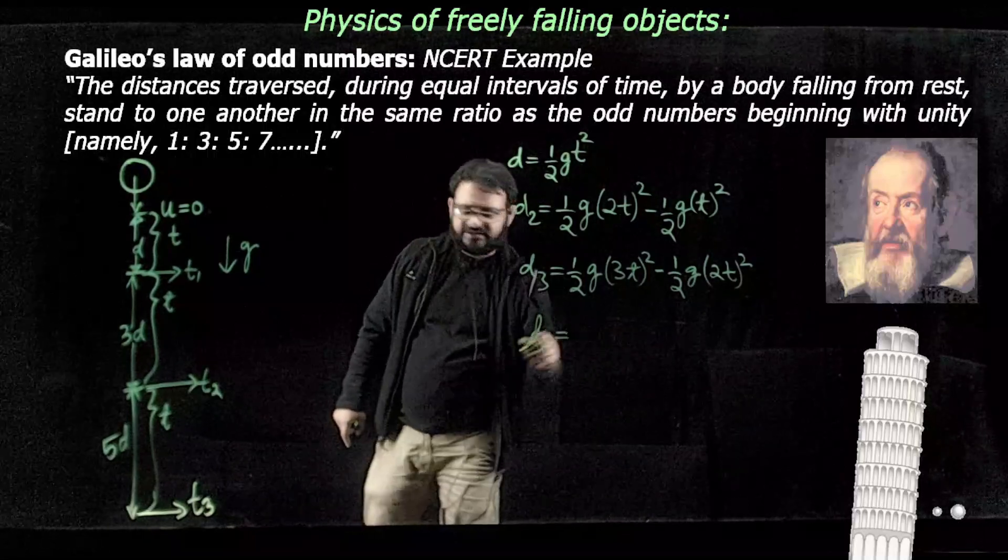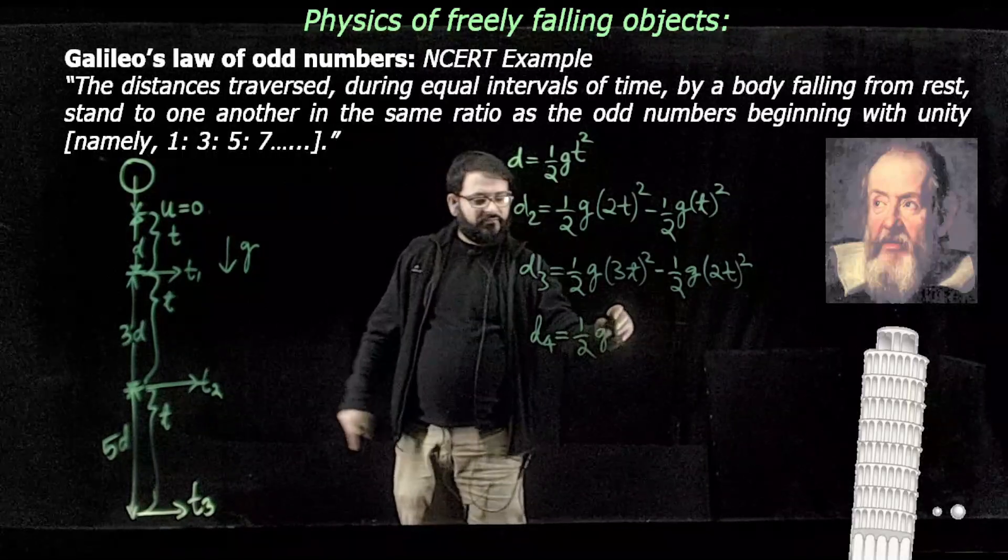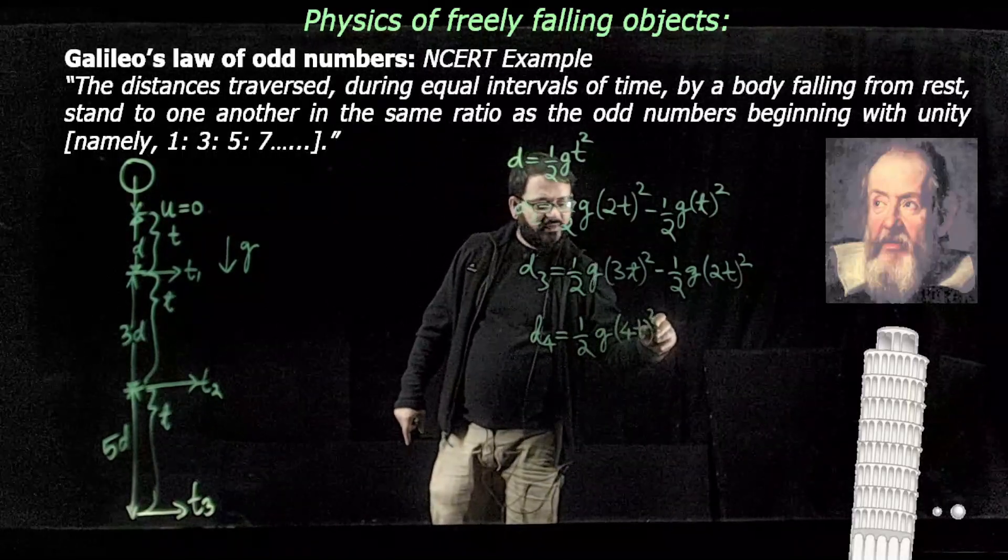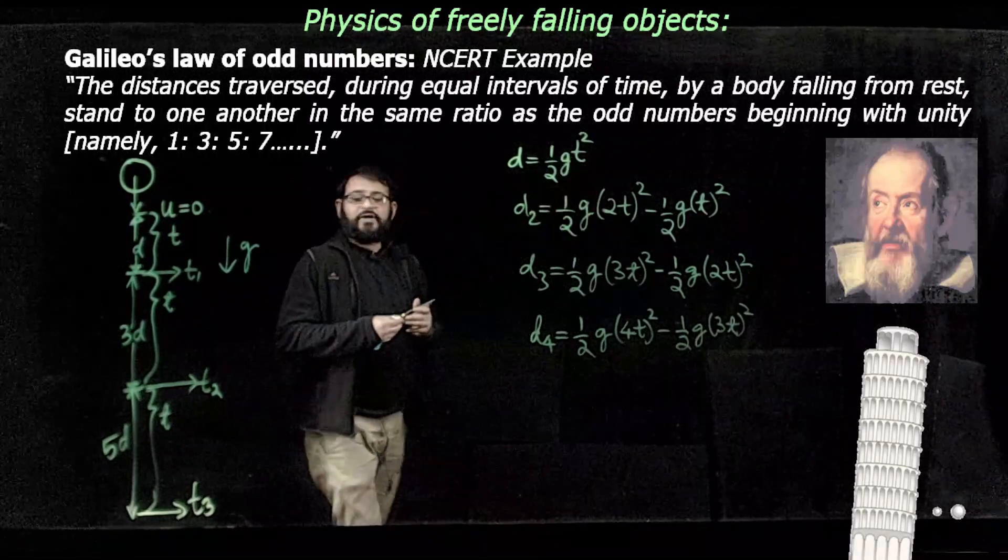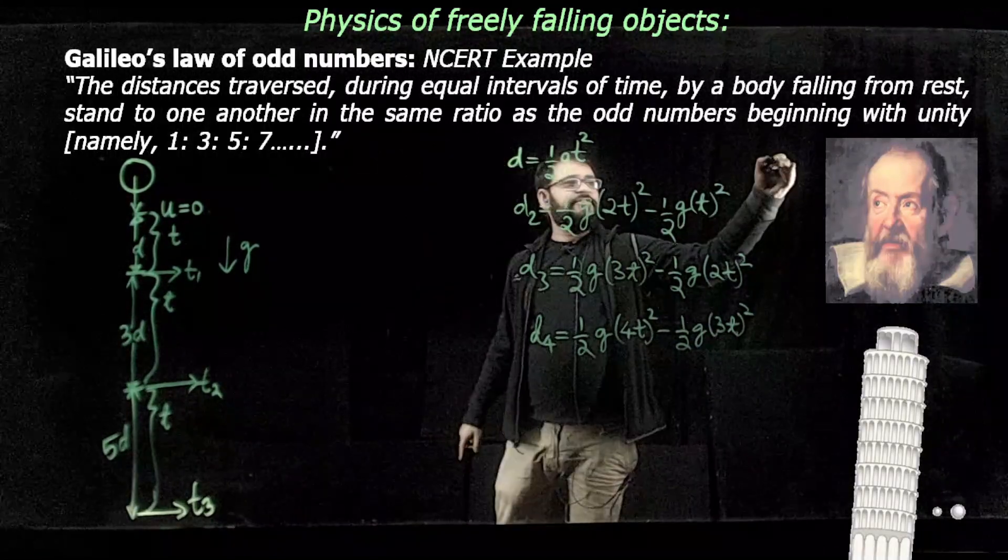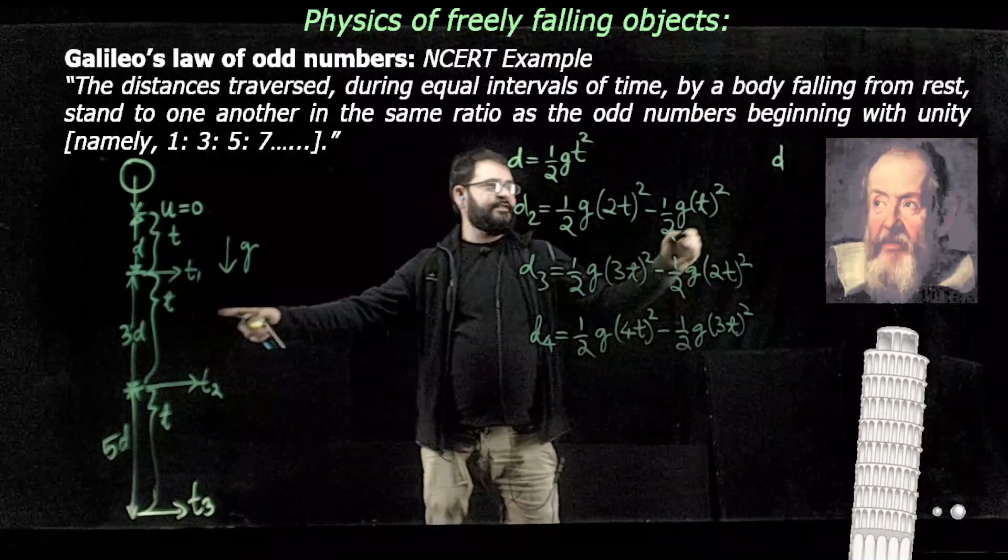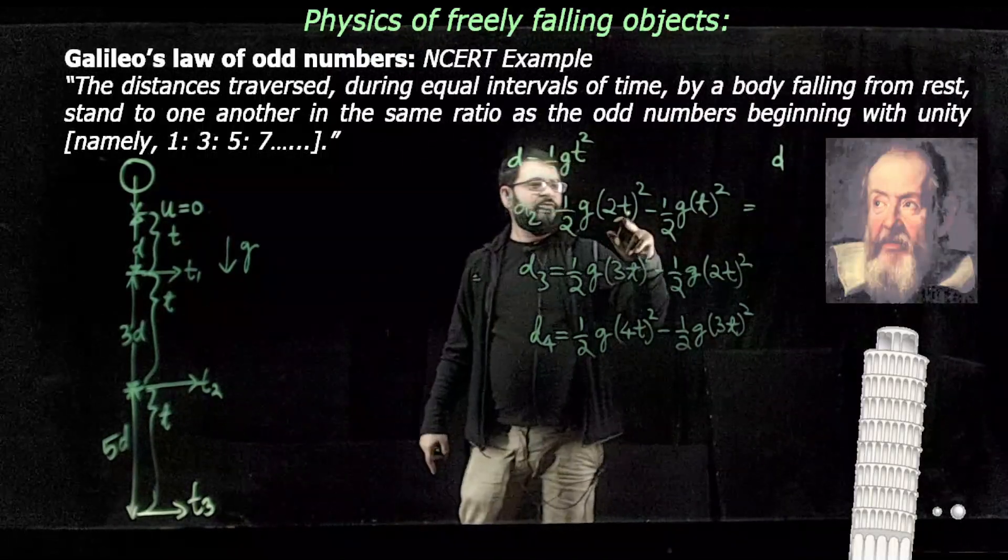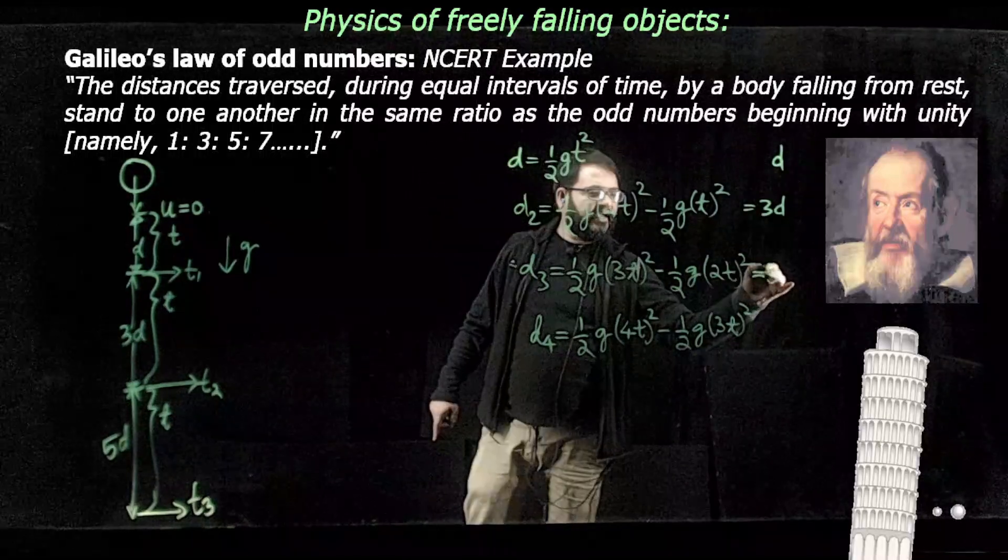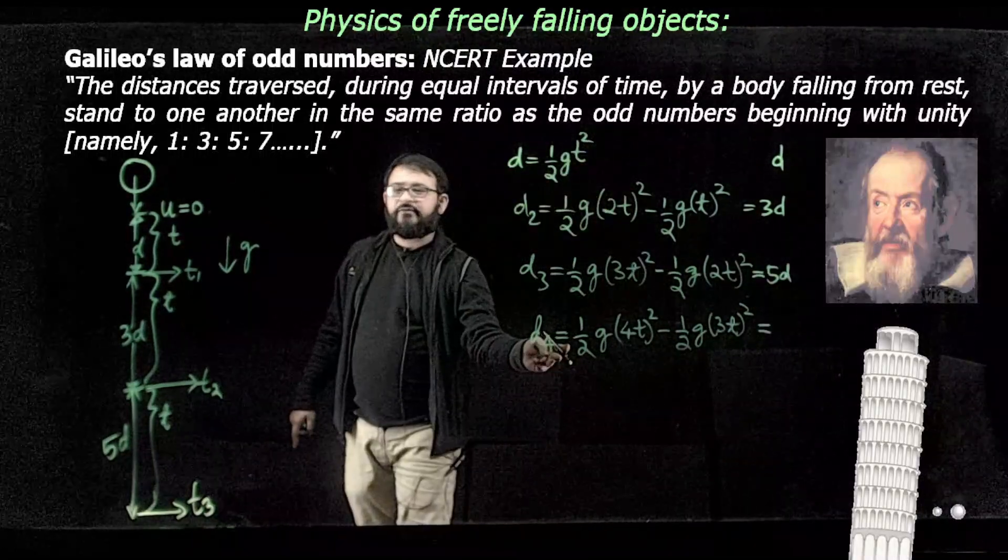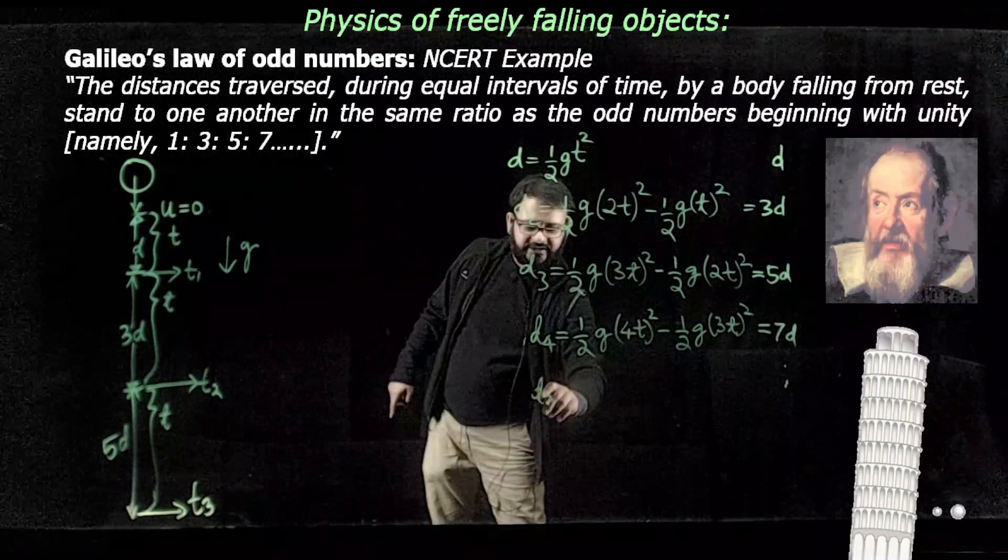The distance traversed during the fourth interval turns out to be 7 times half g T squared. It will turn out to be 4 squared minus 3 squared, which is 16 minus 9 equals 7, and for the fifth interval it will be 9.